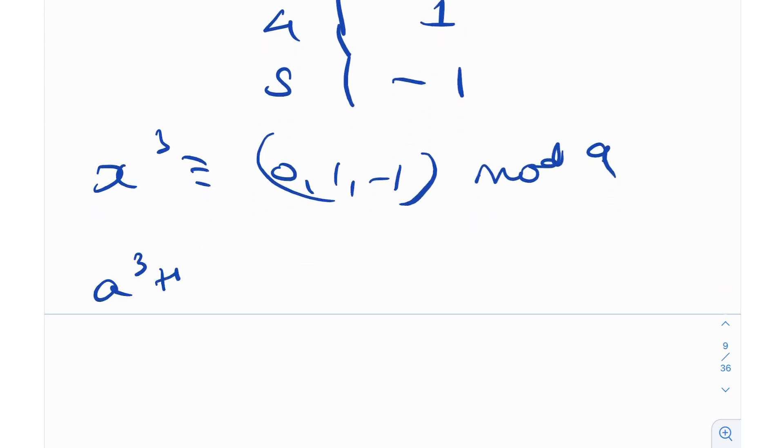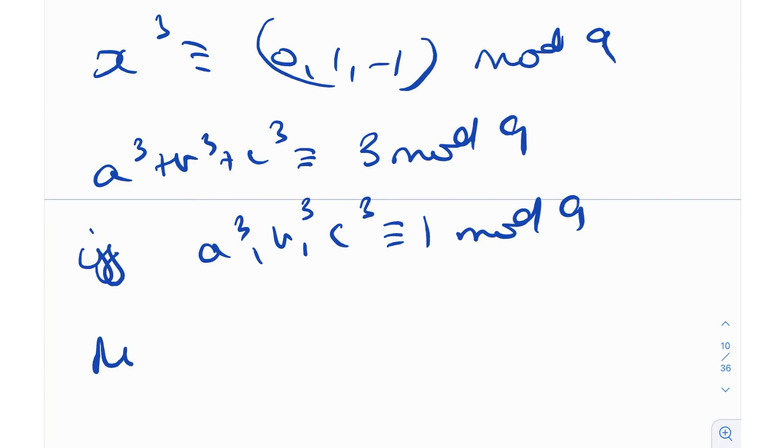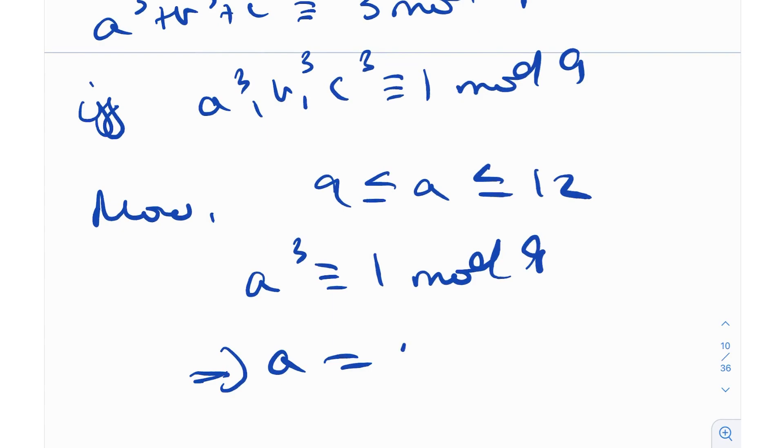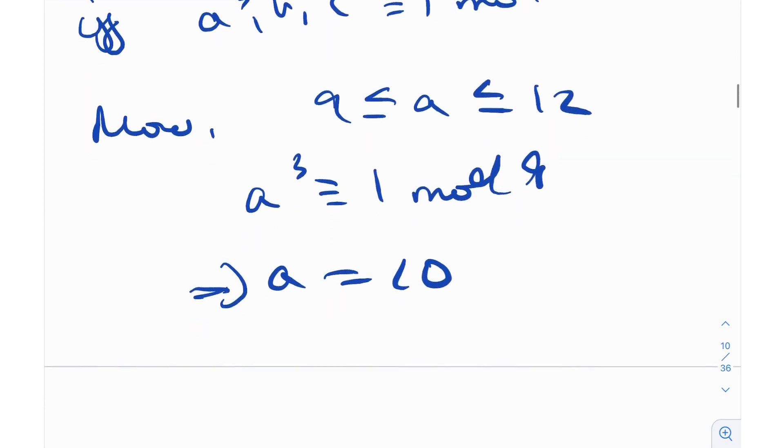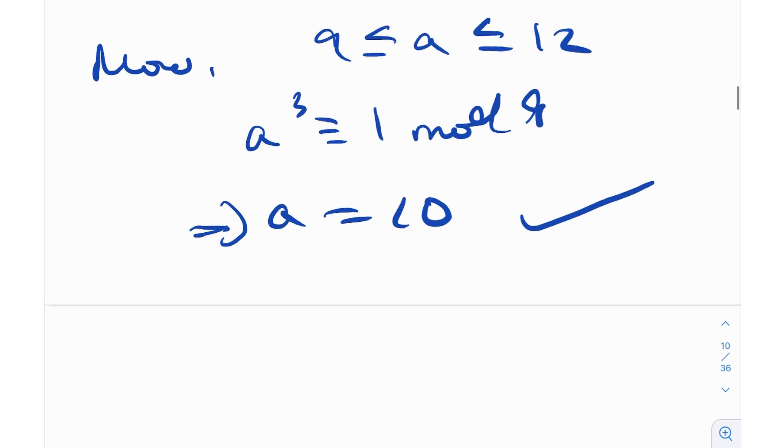Now, A³ + B³ + C³ is congruent to 3 mod 9, because 2001 is 3 mod 9. This can only happen if and only if A³, B³, C³ are individually 1 mod 9. All of the 3 need to be 1 mod 9. If there is any other case, then it does not satisfy. Now, I know for a fact that A is between 9 and 12. But A³ needs to be 1 mod 9, which implies A has to be 10, because there is no other value of A for which you will get 1 mod 9. So A is 10, that's fixed. We found out the value of A without really any casework.